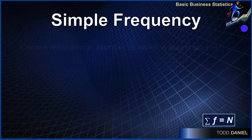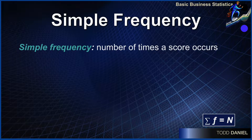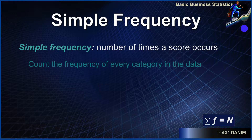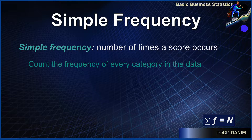Simple frequency is the number of times a score occurs in the data. It is a count of the frequency of every category in the data and how often each category is represented.